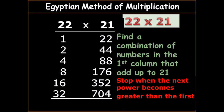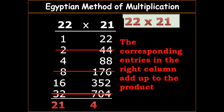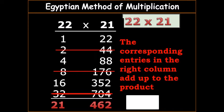So 32, you cancel, you rule it out, that means it's more than the 21. You stop when the next number is greater than the first number. So you add the numbers and see which number will help you to get 21, so 16 plus 4 is 20 plus 1 is 21. The entry that is corresponding, that is 1 and 22, 4 and 88, 16 and 352, you add them up you get 462. So that is the answer.